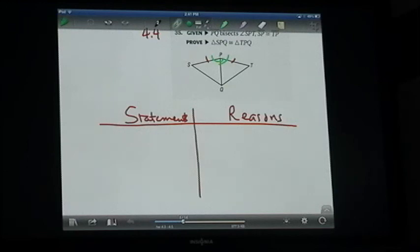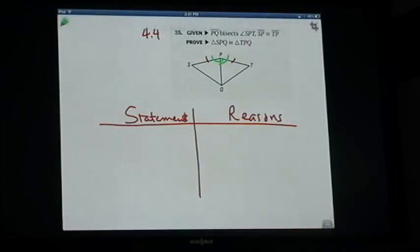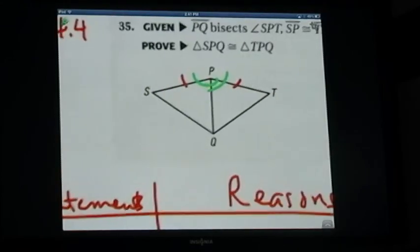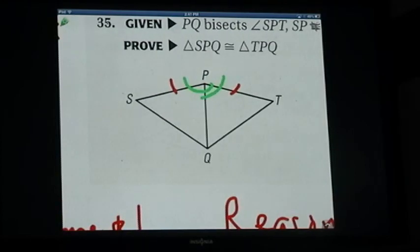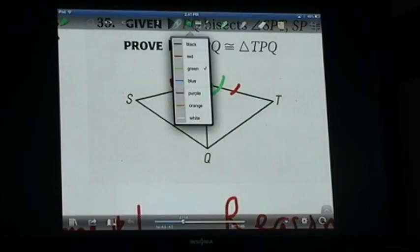Then it says to prove triangle SPQ is congruent to triangle TPQ. So when we look at our figure, let's work it out. We have these to choose from.